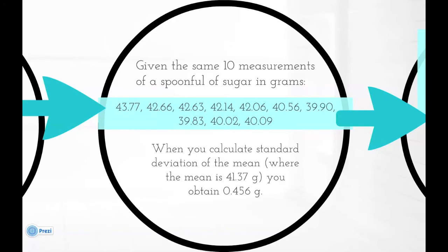Given the same ten measurements of a spoonful of sugar in grams, when you calculate standard deviation of the mean, where the mean is 41.37 grams, you obtain 0.456 grams.